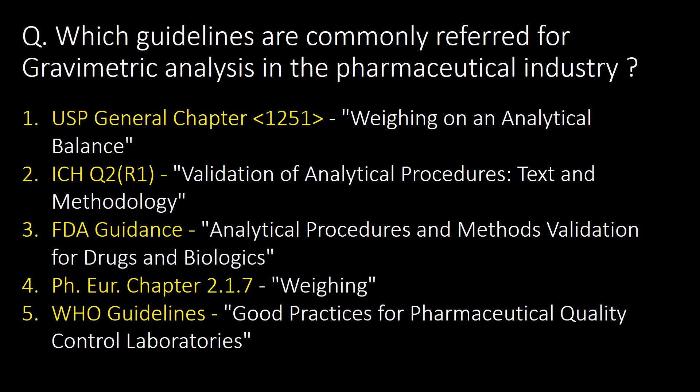Last and very important question: which guidelines are commonly referred to for gravimetric analysis in the pharmaceutical industry? First: USP General Chapter No. 1251. Second: ICH Q2(R1). Third: FDA Guidance. Fourth: Ph.Eur. (European Pharmacopoeia) Chapter No. 2.1.7, and WHO guidelines.